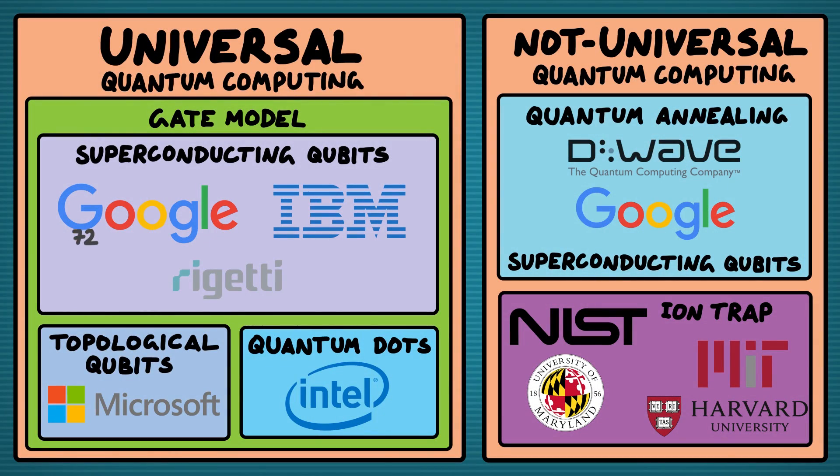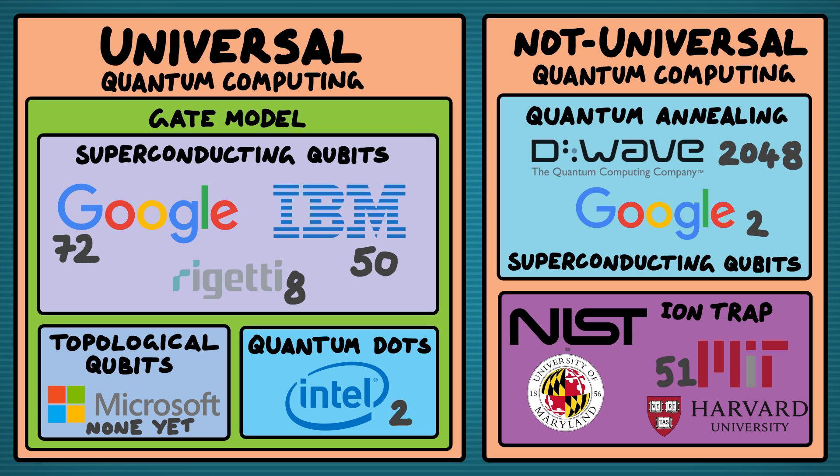These non-universal approaches can be a good stepping stone towards a universal quantum computer because universal quantum computers are very difficult to build, and it's good to learn along the way. The number of qubits is just one measure of how good a quantum computer is — just as important is how low the noise is in the qubits, how high quality the qubits are, and how well the qubits are connected together.